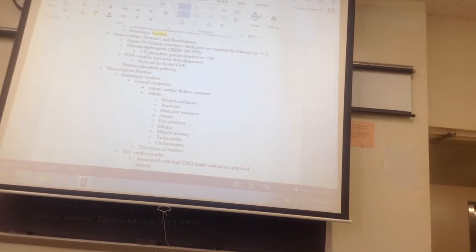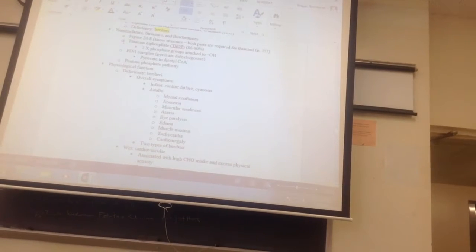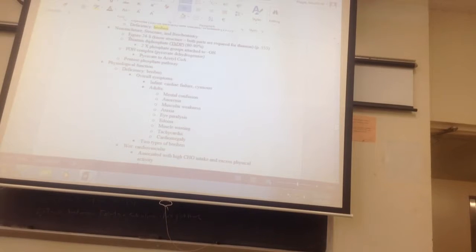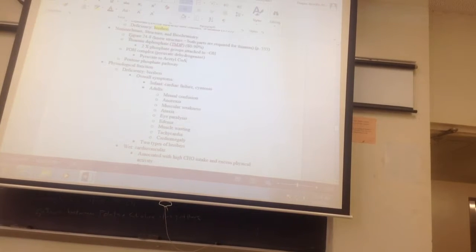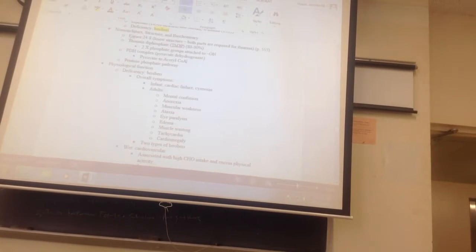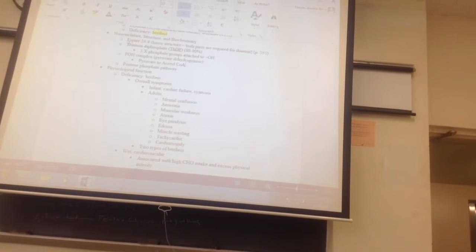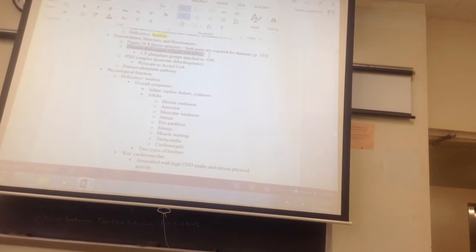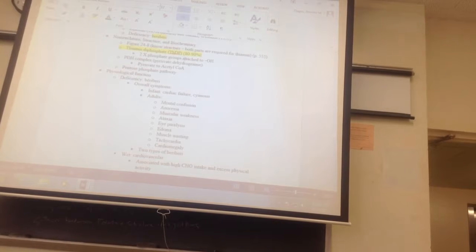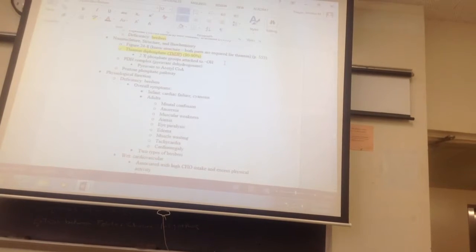The book talks a little bit about how there are emerging roles for these thiamine monophosphates and everything else. The main one in the body is thiamine diphosphate. This is what it gets converted to to be active, 80 to 90%. This is TDP, which means that there are two phosphate groups attached to where the OH is.